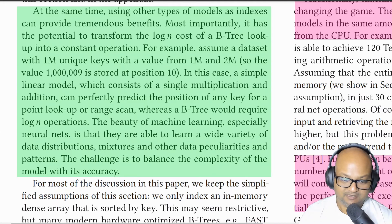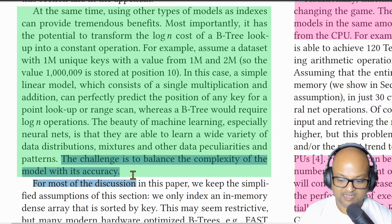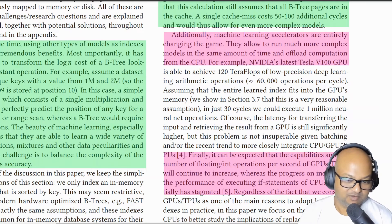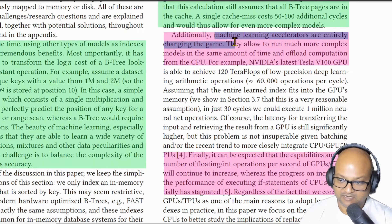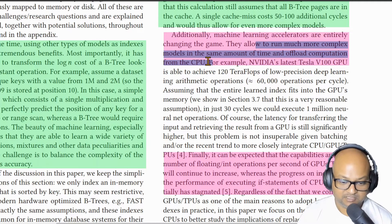Once you look at it through this lens, you can replace a btree with any kind of machine learned model. And the main trade off becomes between the complexity of this model and the accuracy of its predictions. And this is where the authors look towards where hardware trends are going, and look at how machine learning accelerators like GPUs or tensor processing units can take this computation off the main CPU and do it much, much faster.